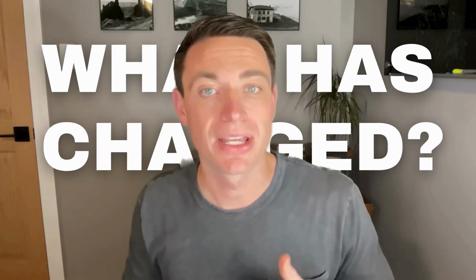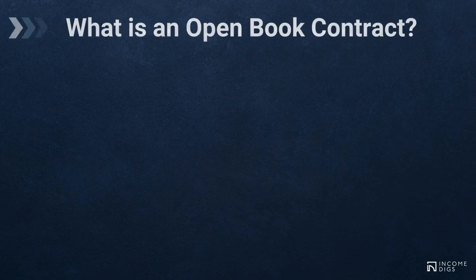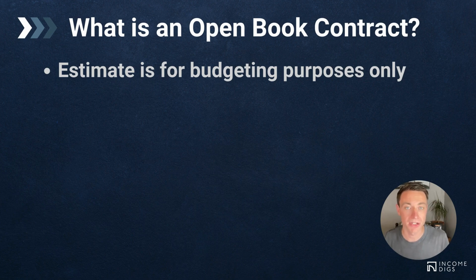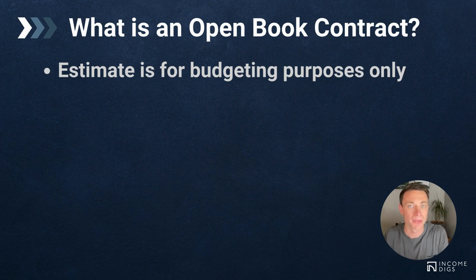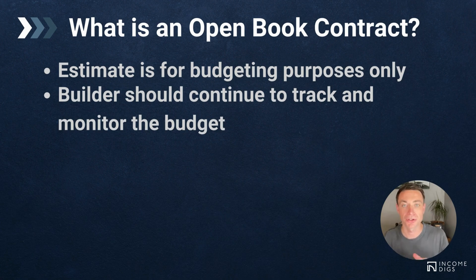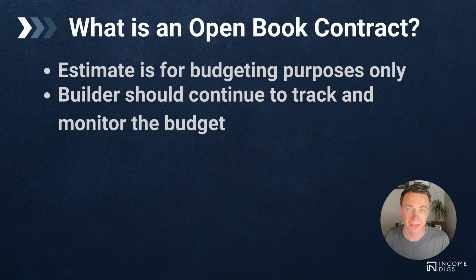What has changed is that Buildertrend now gives us the option to do an open book contract. With an open book contract, your estimate is for budgeting purposes only. You should always still be estimating — don't just go into an open book contract and say we'll see what the costs are. That's unfair to your customer, and as a builder you want to have a budget no matter what to track your estimating abilities and how you actually did.